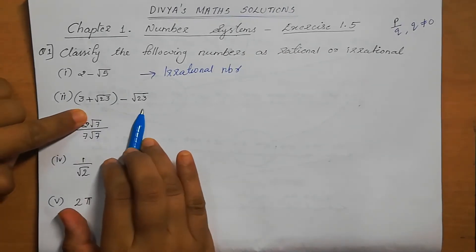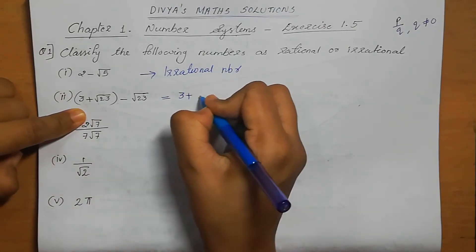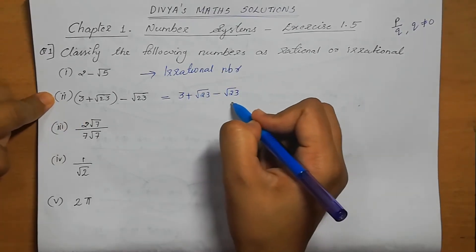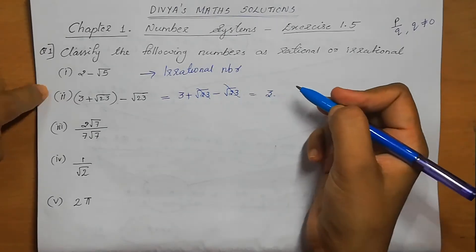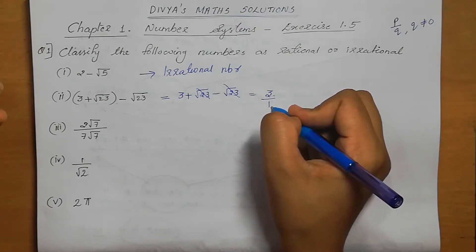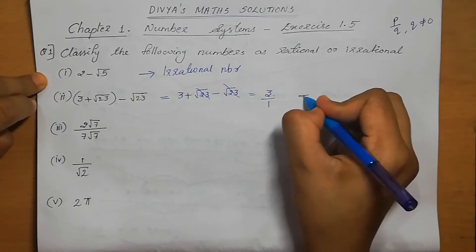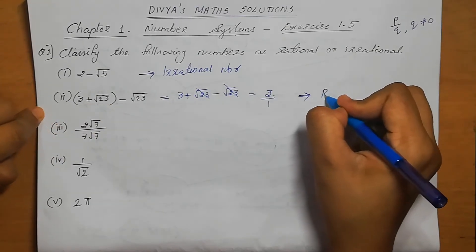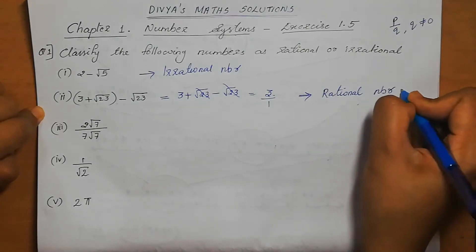Next: 3 plus root 23 minus root 23. Removing the bracket gives us 3 plus root 23 minus root 23. Root 23 minus root 23 is 0, so we get the answer as 3. We can write 3 as 3 by 1, where 3 and 1 are integers and Q is not equal to 0. This satisfies the condition of rational numbers, so this is a rational number.